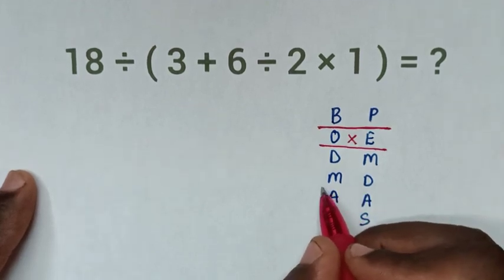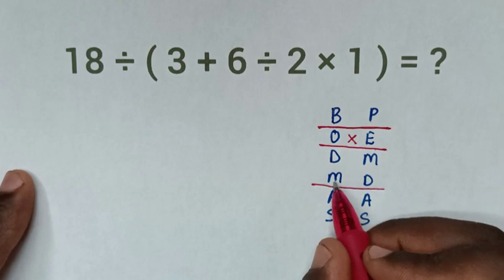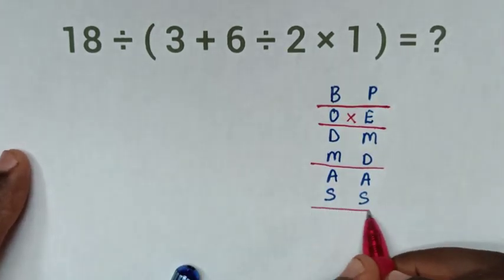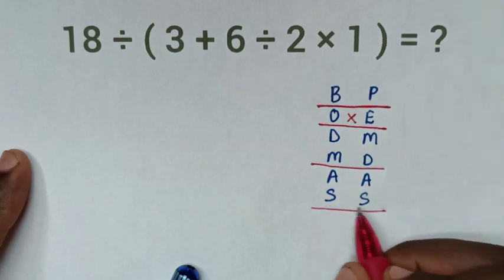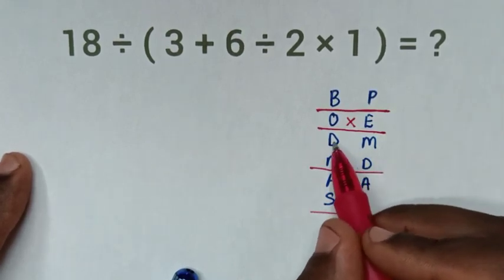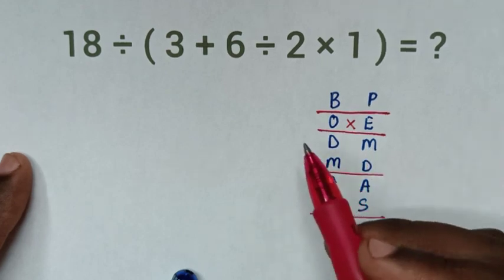Then, in here, division, multiplication, multiplication, division. And then, in here, we have addition and subtraction. So, first, we'll start to deal with division, multiplication, or multiplication, division from left to right.